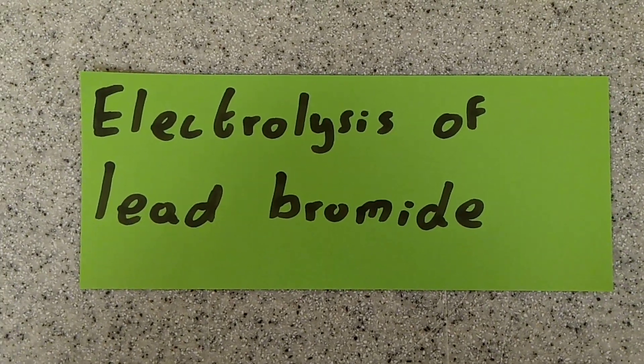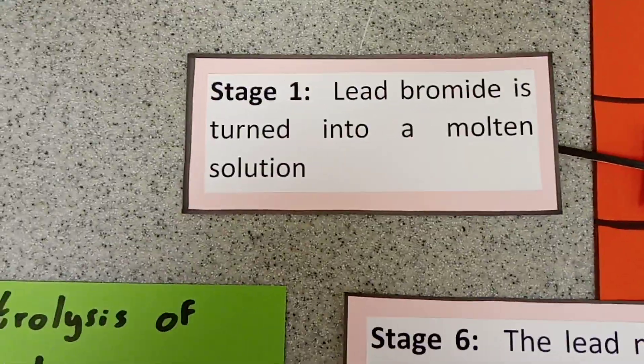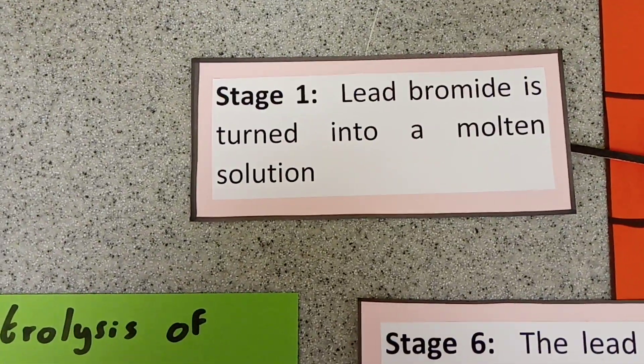The type of electrolysis that you'll need to know about is the electrolysis of lead bromide. So we start off, we make the lead bromide molten by heating it up.